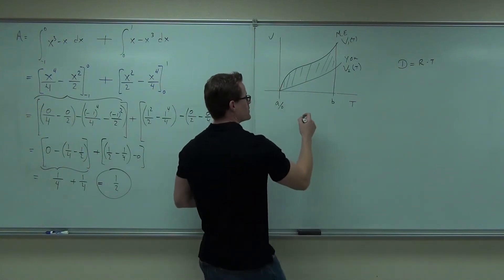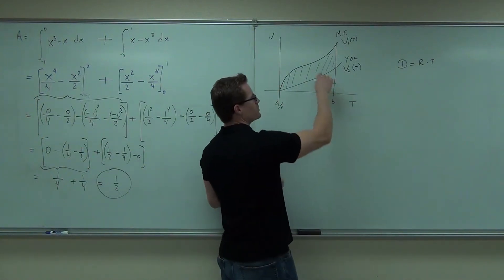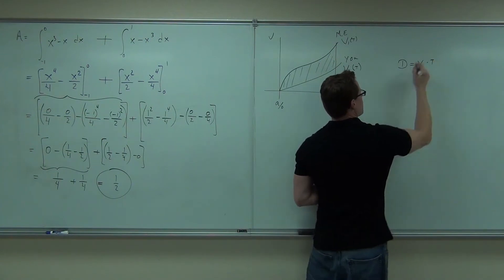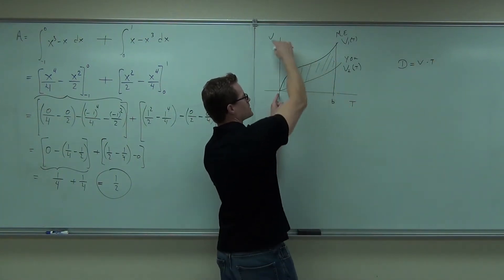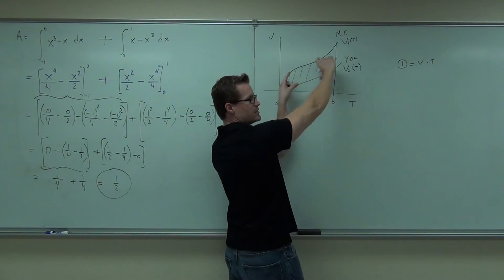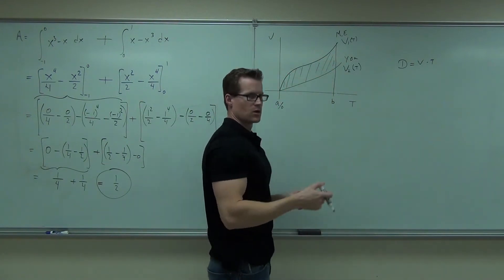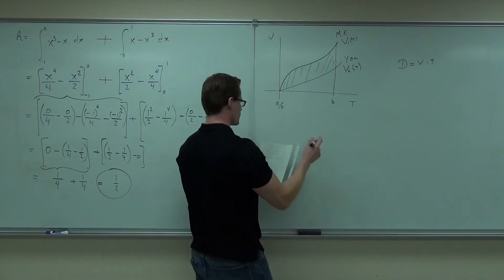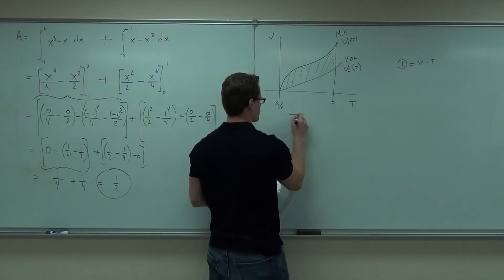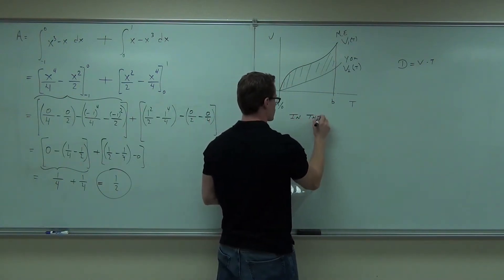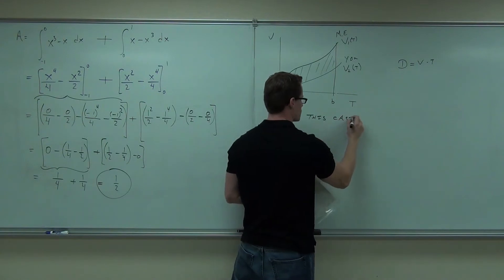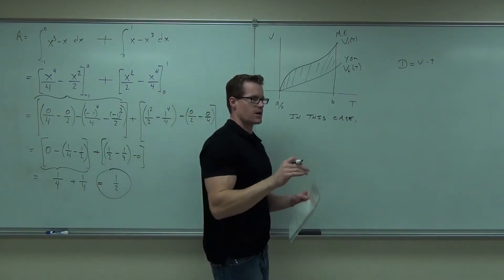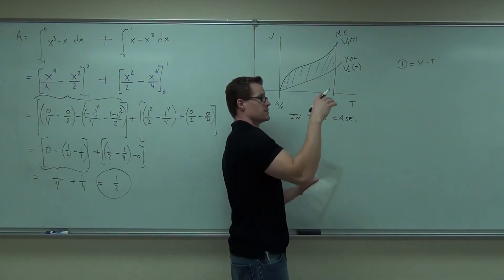Find the area between the two curves. Notice here this could be a velocity area — velocity times time gives you a distance. So the area between the two curves is representing a distance between my cars. In this case, the area equals the distance that car one — me — is ahead.